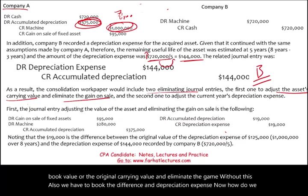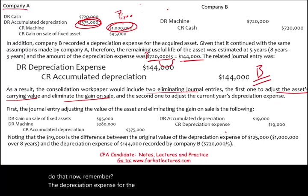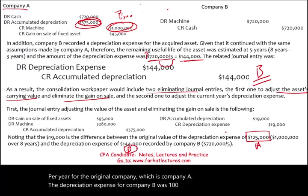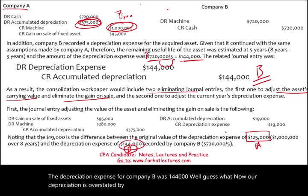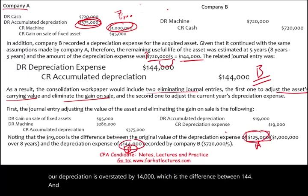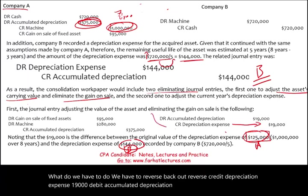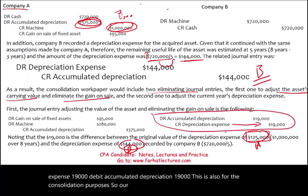The depreciation expense for the original company — Company A — was $125,000 per year, which is $1,000,000 divided by 8 years. The depreciation expense for Company B was $144,000. Our depreciation is now overstated by $19,000, which is the difference between $144,000 and $125,000. We have to reverse that: credit depreciation expense $19,000 and debit accumulated depreciation $19,000. This ensures our depreciation expense is not overstated and our accumulated depreciation is properly stated in the consolidation.